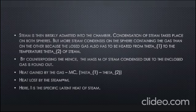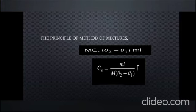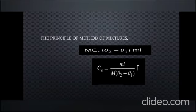Heat gained by the gas equals MC(θ2 - θ1). Heat lost by the steam equals ML, where L is the specific latent heat of steam. By using the principle of method of mixture, MC(θ2 - θ1) equals ML. CV equals ML divided by M(θ2 - θ1).